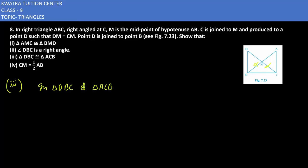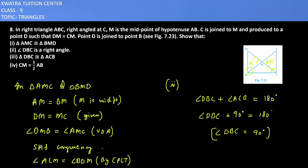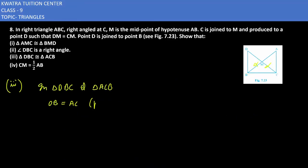First you will write DB is equal to AC. If you cannot write 'given', what can you do? Because it has not been given. We can prove it using triangle AMC and BMD. Here you can write by CPCT, DB is equal to AC. This was proved in part one.